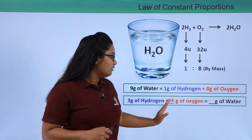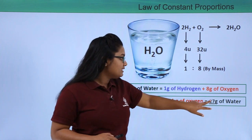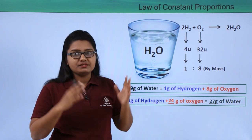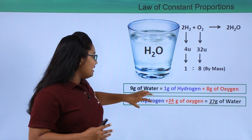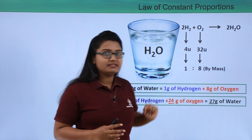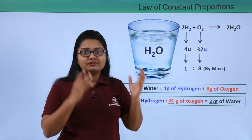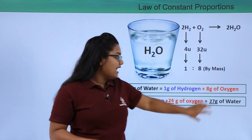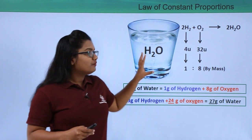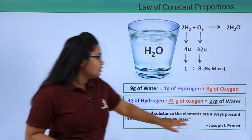Therefore, 3 grams of hydrogen combined with 24 grams of oxygen gives 27 grams of water. This is consistent with the Law of Conservation of Mass: the mass of the reactants (24 + 3 = 27 grams) equals the mass of the product (27 grams of water).